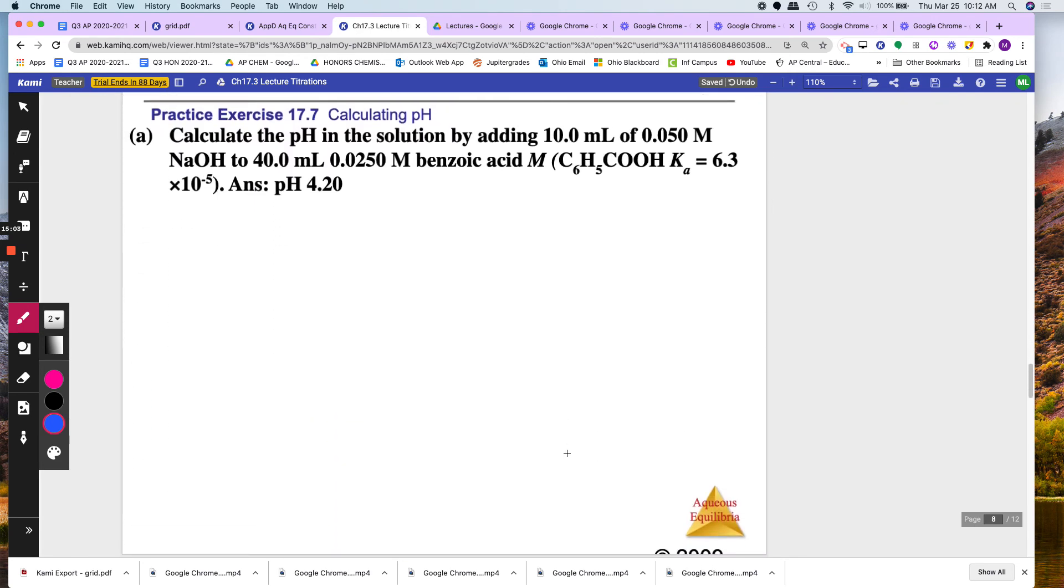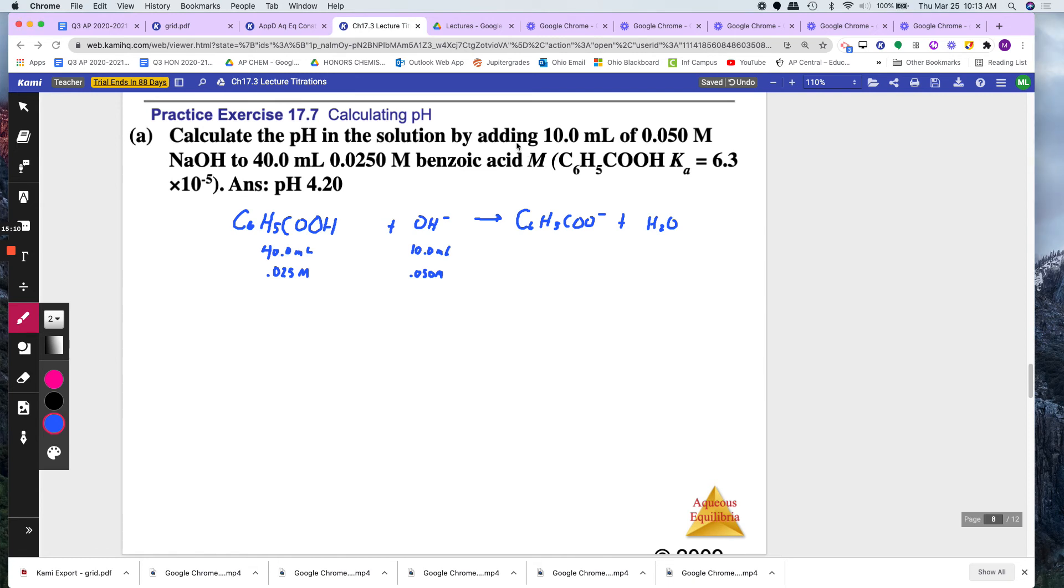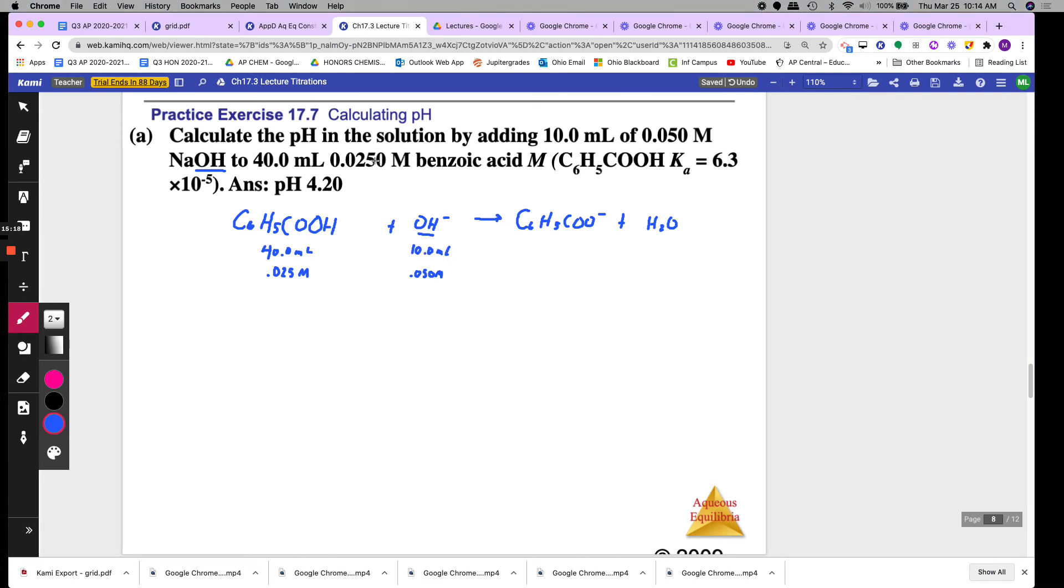Here's another exercise. Go ahead and pause the video and try it yourself. It says calculate the pH in a solution by adding 10 mLs of NaOH. So I wrote the NaOH here, OH minus. And I wrote 10 mLs and 0.05 here, 0.025 molar benzoic acid. And here's the acid, knowing that this is the acidic proton that comes off. So I wrote that here. I wrote 40 mLs, 0.025. They gave me the Ka so I don't have to look it up. So I multiplied these two to get moles. So I got 0.001 moles. I multiplied these two to get moles. I got 0.00125 moles. Then I added the total volume, 40 plus 10 is equal to 50, 0.050 liters.